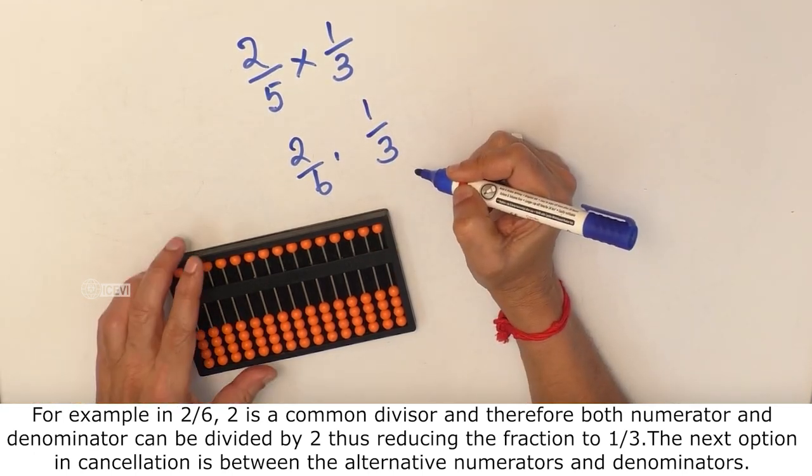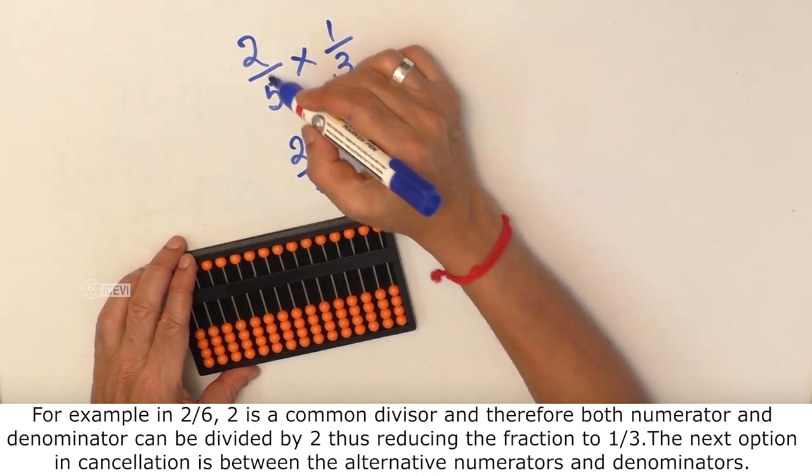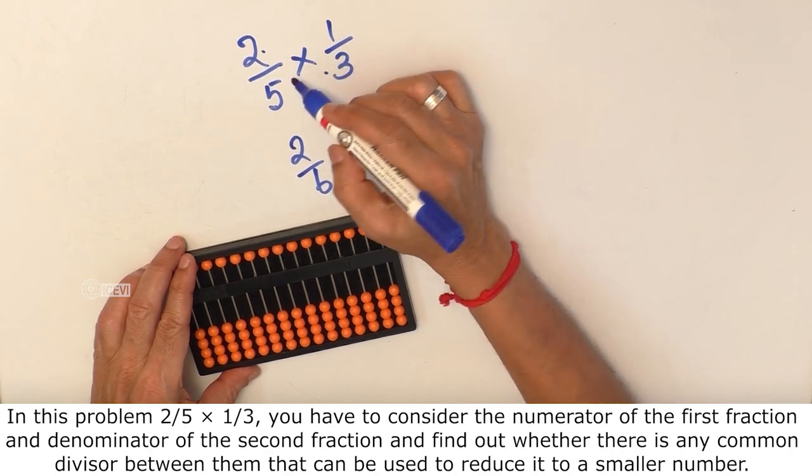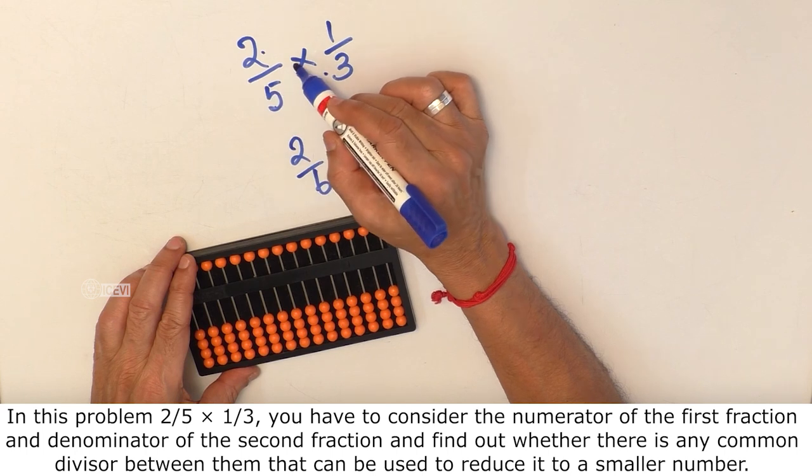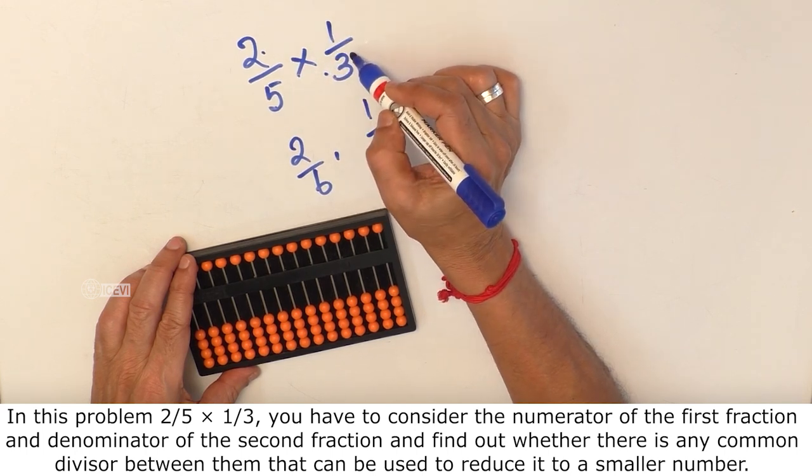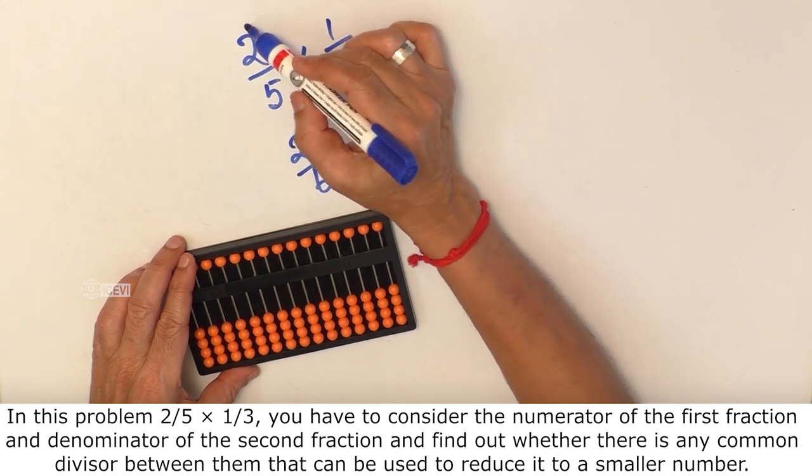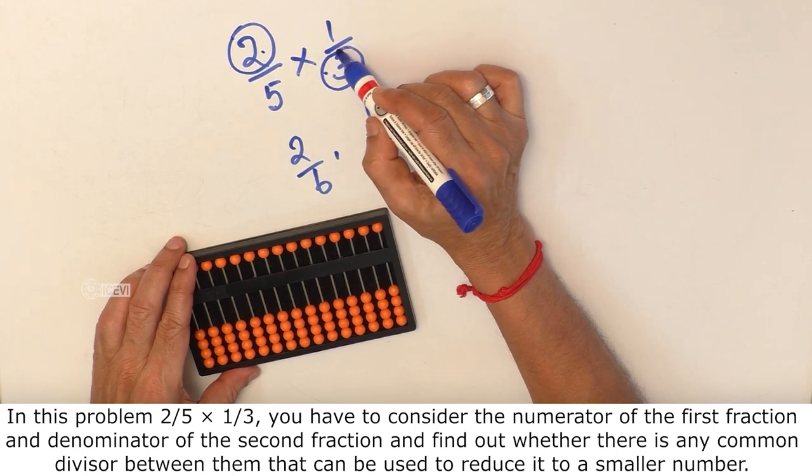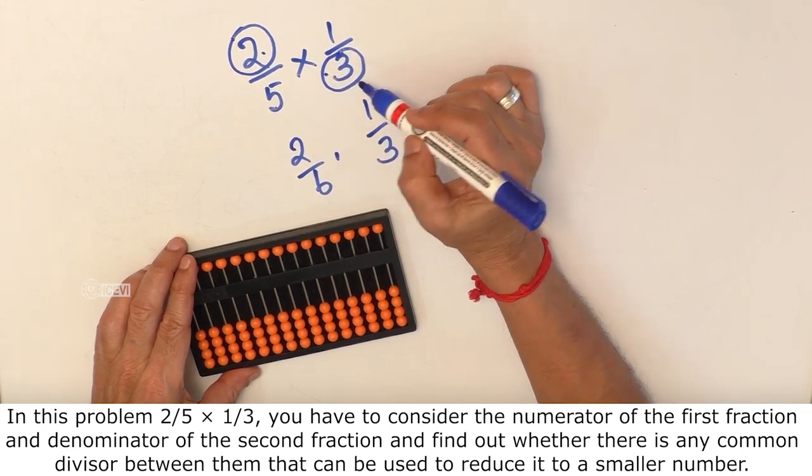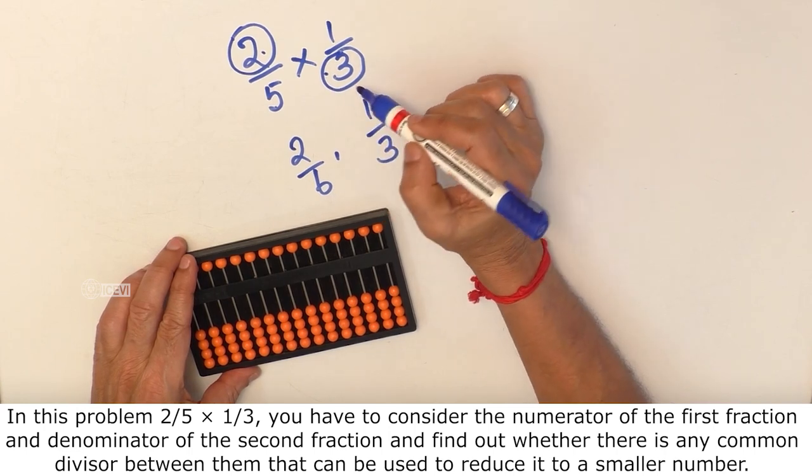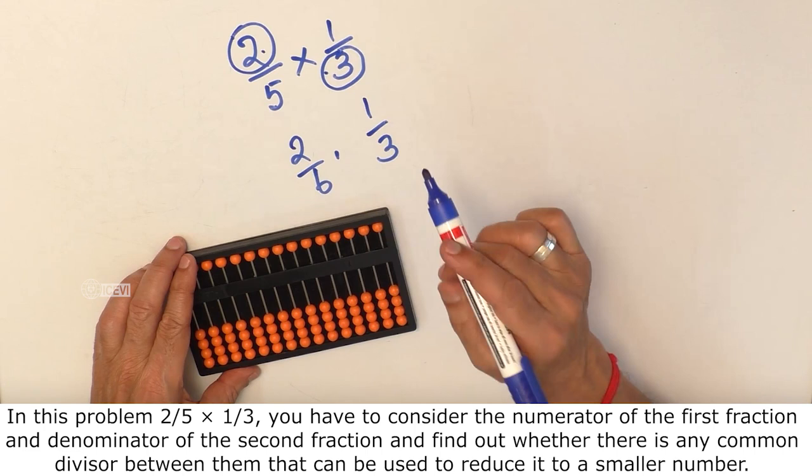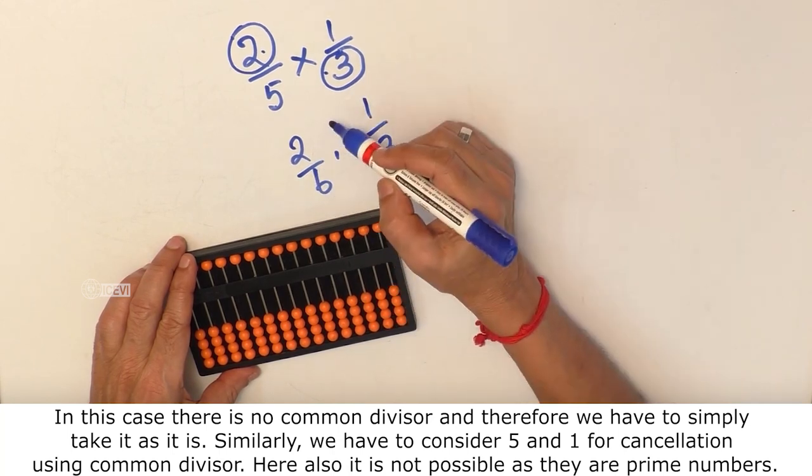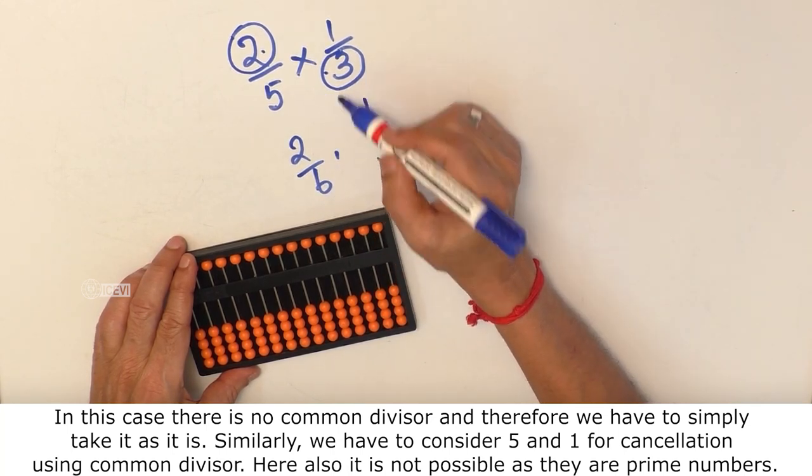The next option in cancellation is between the alternative numerators and the denominators. In this problem, 2 by 5 multiplied by 1 by 3, you have to consider the numerator of the first fraction and the denominator of the second fraction and find out whether there is any common divisor between them that can be used to reduce it to a smaller number. In this case, it is not possible as 2 and 15 do not have common divisors and therefore, we have to simply take it as it is.